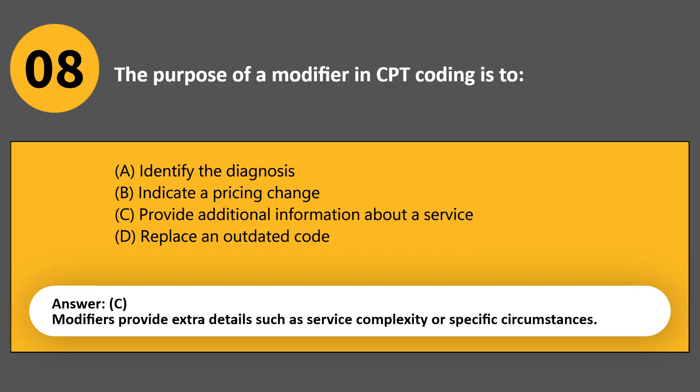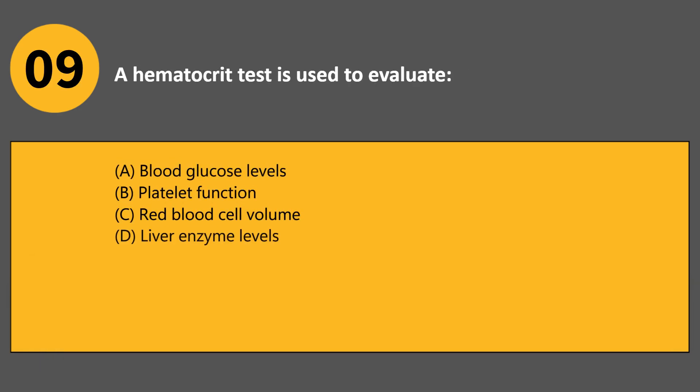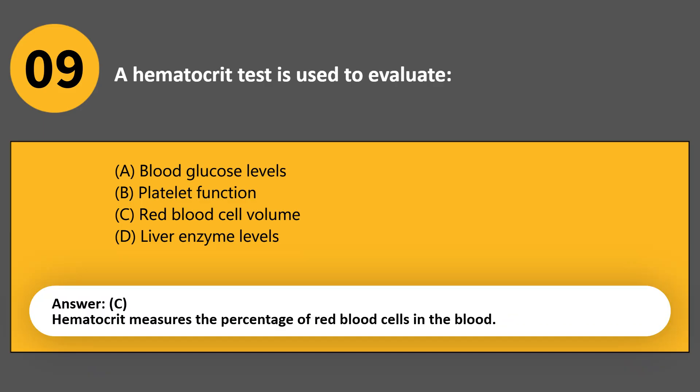A hematocrit test is used to evaluate: A. Blood glucose levels. B. Platelet function. C. Red blood cell volume. D. Liver enzyme levels. Answer C. Hematocrit measures the percentage of red blood cells in the blood.